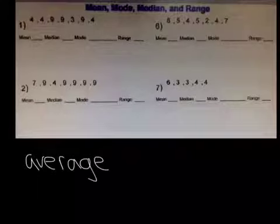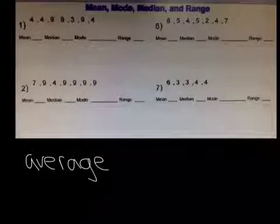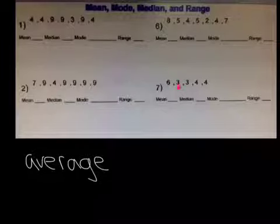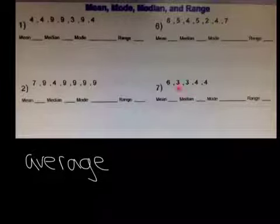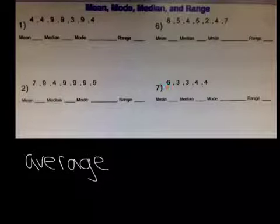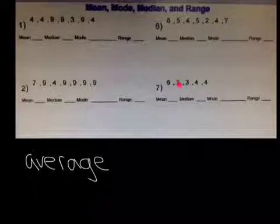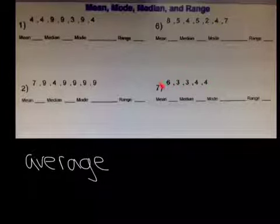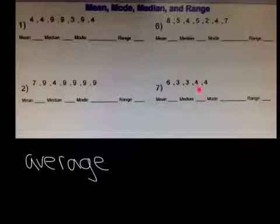In order for us to find the average, what we must do is add all of these numbers, find the sum of the list of numbers, and then divide it by the number of numbers. Here we have 1, 2, 3, 4, 5, so after we add all of these numbers we will divide it by 5.